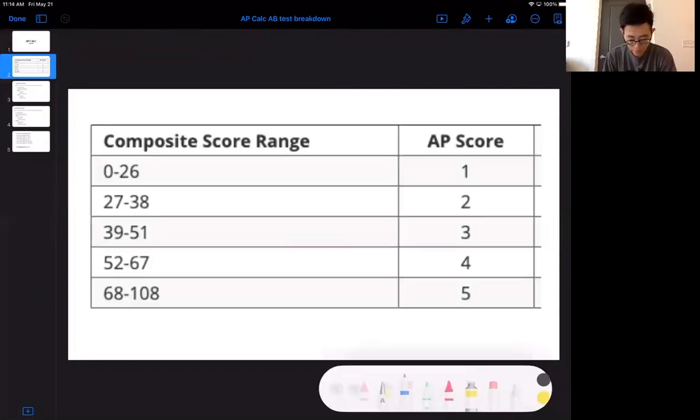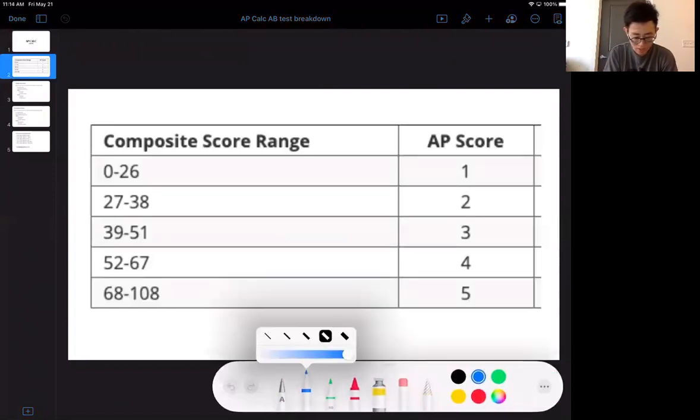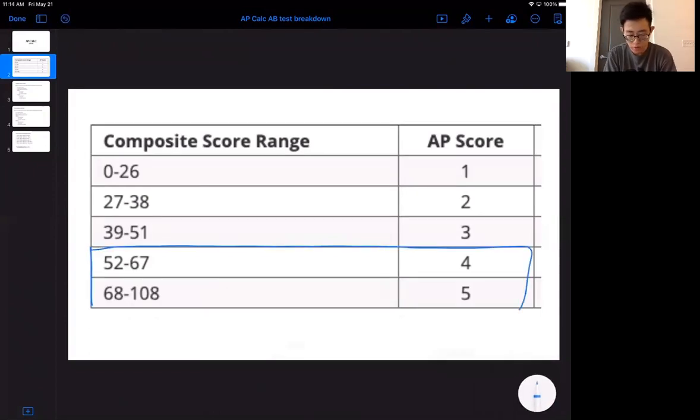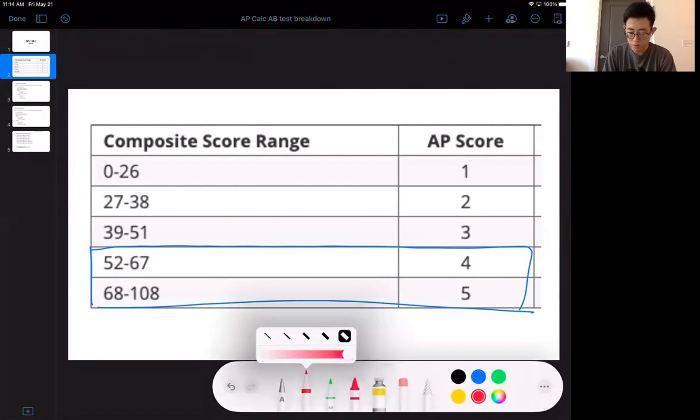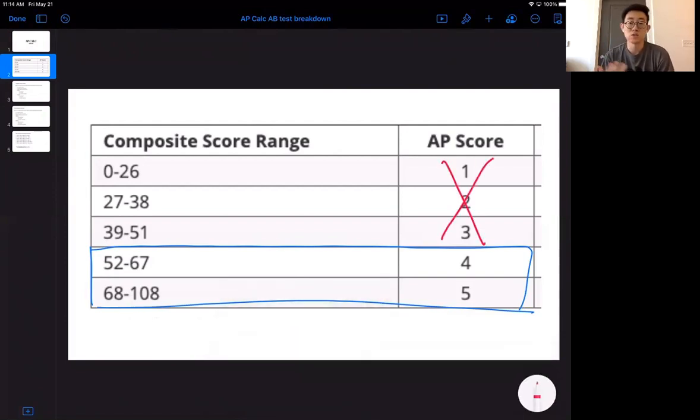You guys don't want a 3, 2, or 1. This is complete garbage because the colleges usually will not accept a credit score for anything below a 4. If you got a 4, they will probably give you a credit score so you can go up to the next level which is Calc 2. If you got a 5, there's no doubt, but some colleges might not accept a 4. So it's a good idea to always be shooting for the stars, shoot for the 5.